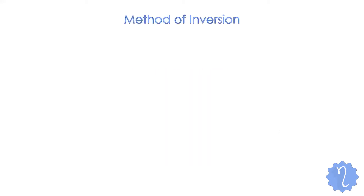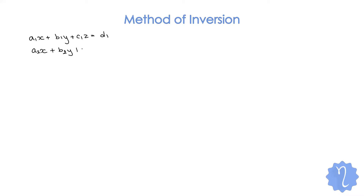We are going to solve a system of equations using matrices. Like we have in school, we have two variables and two equations. Suppose we have three variables and three equations. For example, a1x + b1y + c1z = d1 is the first equation. We have two other equations with three variables x, y, and z: a2x + b2y + c2z = d2, and the last one with all 3s.